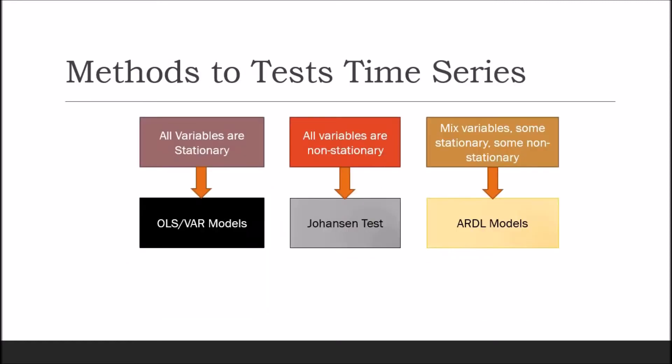If all variables are stationary, you will use OLS or vector autoregressive VAR models to get unbiased estimates. OLS determines the relationship between the given variables. The vector autoregressive VAR model allows feedback or reverse causality among the dependent and independent regressors using their own past values.